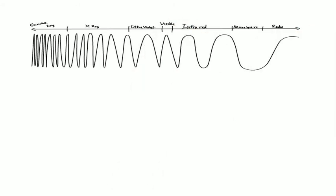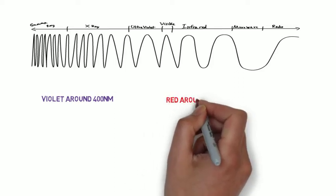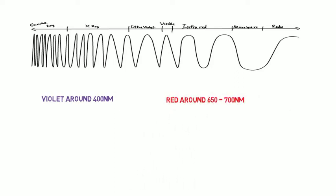This ranges from violet light which has a wavelength of around 400 nm to red light which has a wavelength of around 650-700 nm.